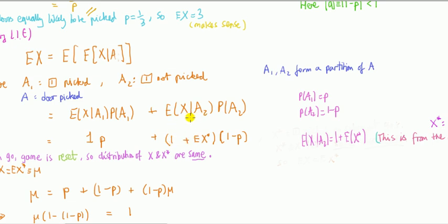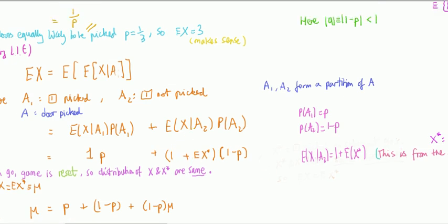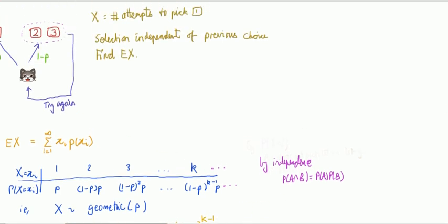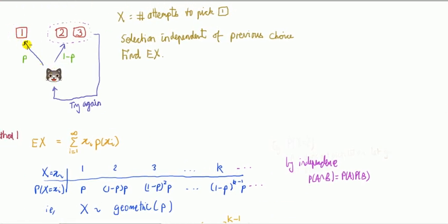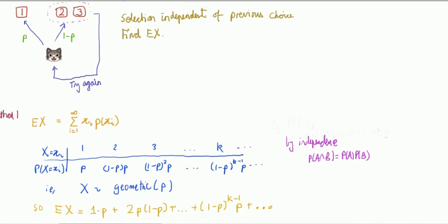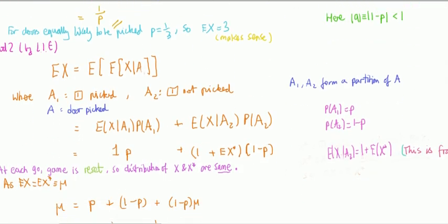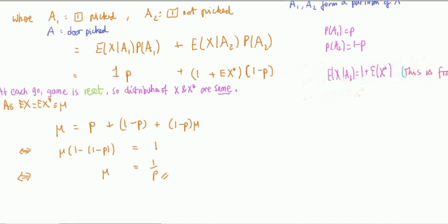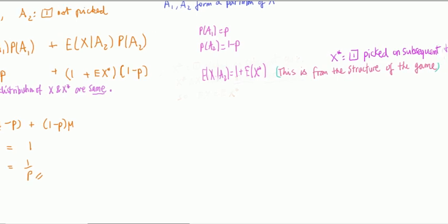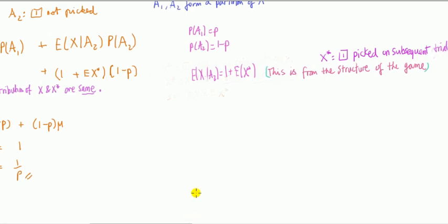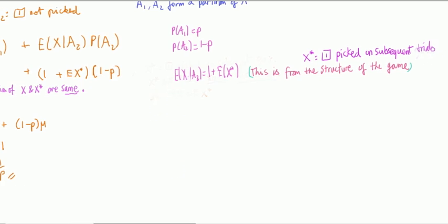However, for these problems, we can use the structure of the problems often to write this thing down pretty much straight away without doing any extra summations or integrations. What does it mean to say the mean number of goes to pick door one given that one is picked? That means it picks door one, that's one go and the game ends. This one here, if door one is not selected, then you've taken one go and then you return to the start of the game.